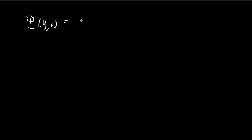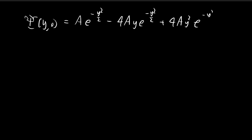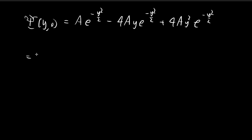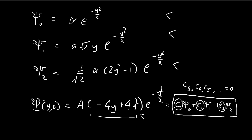We rearrange the initial wave function by expanding the bracket, giving us: 4a · y² · e^(−y²/2) and other terms. Manipulating these expressions to match ψ₀, ψ₁, and ψ₂: for the first term, I divide by α and multiply by α — these cancel — and the resulting term α · e^(−y²/2) is exactly ψ₀.